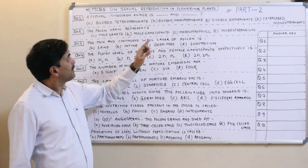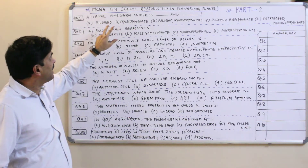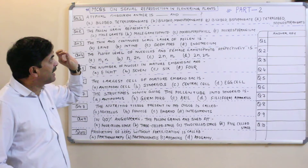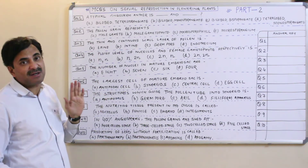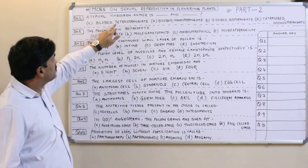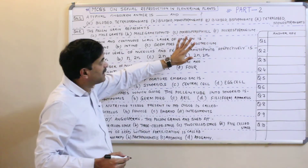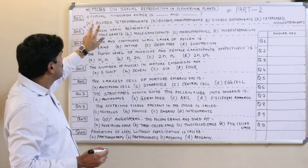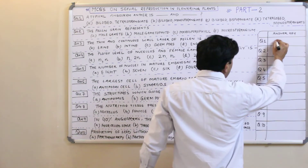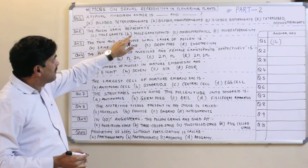The first question is: a typical angiosperm anther is blank and blank — meaning whether the anther is bilobed or unilobed. In my previous video I told you that generally the anther is bilobed, and a bilobed anther is tetrasporangiate. So a typical angiosperm is bilobed and tetrasporangiate. The answer must be A. Question number one has the answer A.